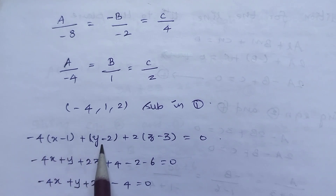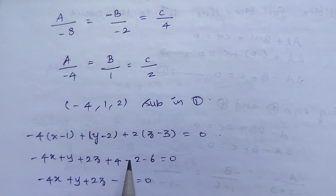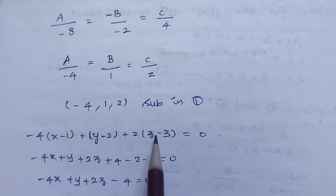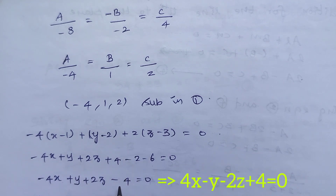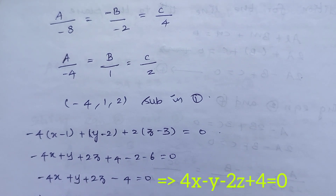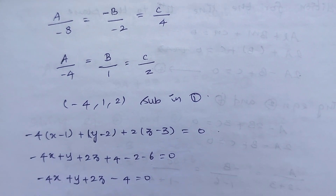Substituting direction ratios -4, 1, 2 into equation 1: -4(x-1) + (y-2) + 2(z-3) = 0. Expanding: -4x + 4 + y - 2 + 2z - 6 = 0. Simplifying: -4x + y + 2z - 4 = 0. This is the required plane equation for Subdivision 3.